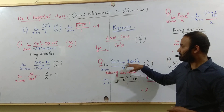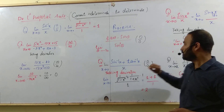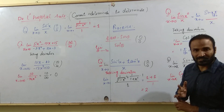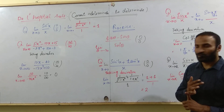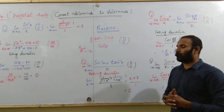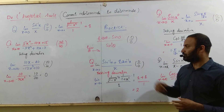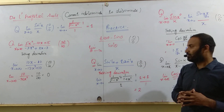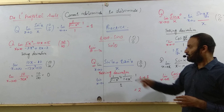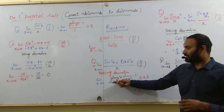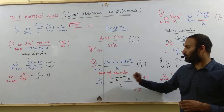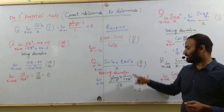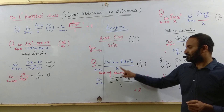Another question: the limit of (sine inverse x plus tan inverse x) divided by x, as x approaches 0. This is a 0 over 0 form. No factorization method, no rationalization method, no other method can be applied here. So take the derivative of the numerator and the derivative of the denominator separately — do not apply the quotient rule. The derivative of sine inverse x is 1 over √(1 − x²), plus the derivative of tan inverse x, which is 1 over (1 + x²), and the derivative of x in the denominator is 1.